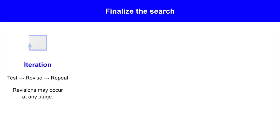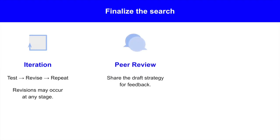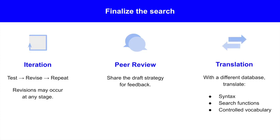In this video, we developed a draft search strategy. To finalize the search, proceed with several activities. The first is iteration — test and revise the strategy, repeating the cycle to optimize search relevance. Revisions may occur at any stage of the review; even during data analysis, you might return to search for additional publications. Another activity is peer review — share the draft strategy and search results with peer researchers for feedback. Finally, there's translation: search strategies are database-specific, so when proceeding to a different database, it's essential to translate the syntax, search functions, and controlled vocabulary to the new system.